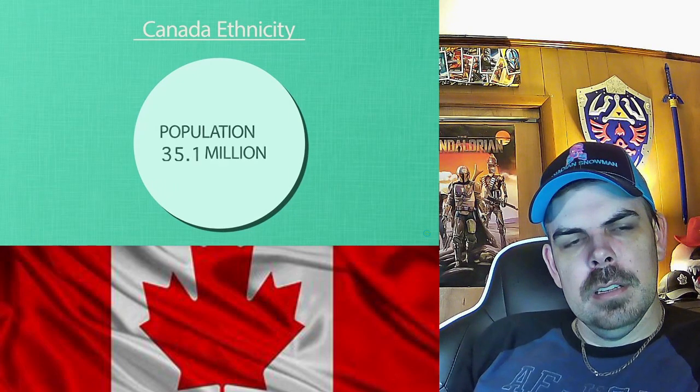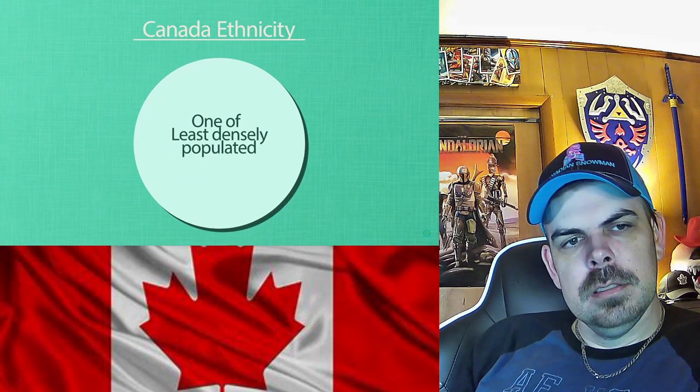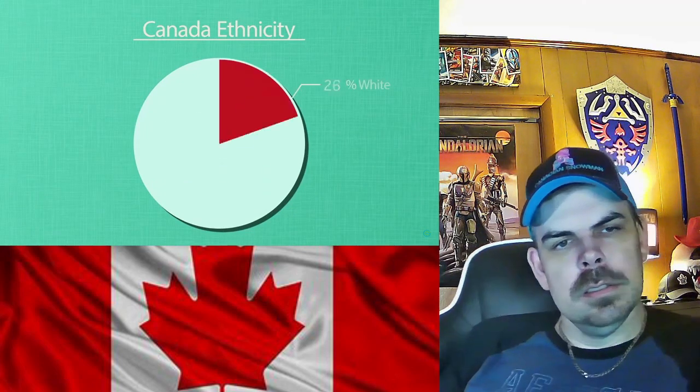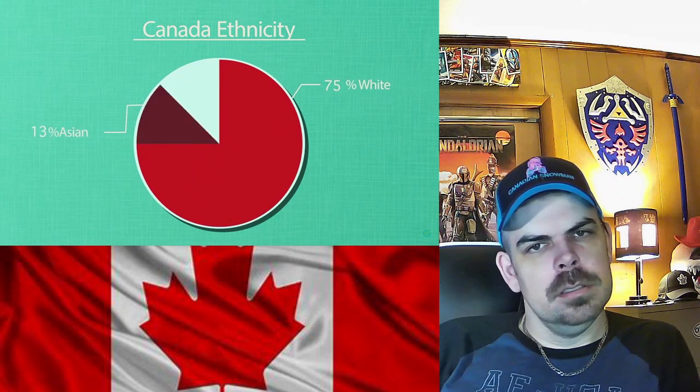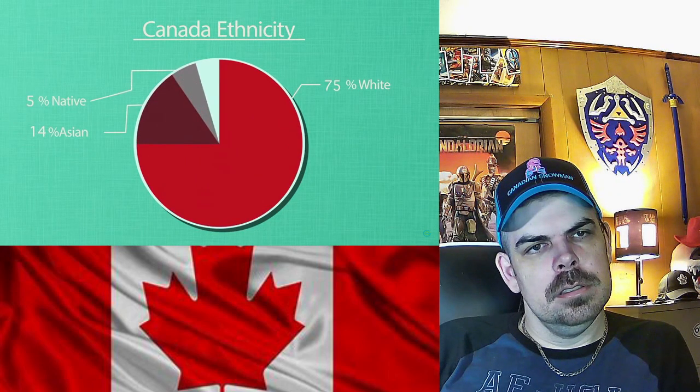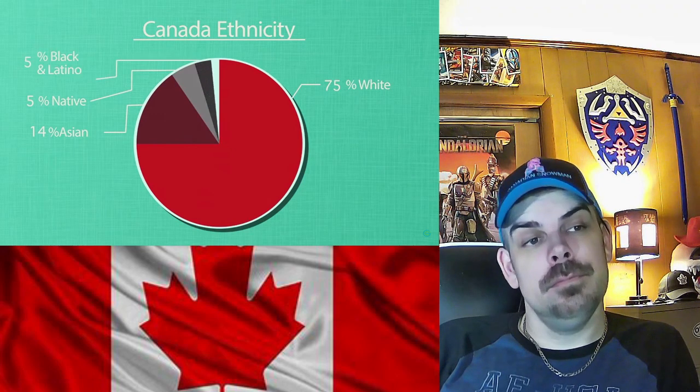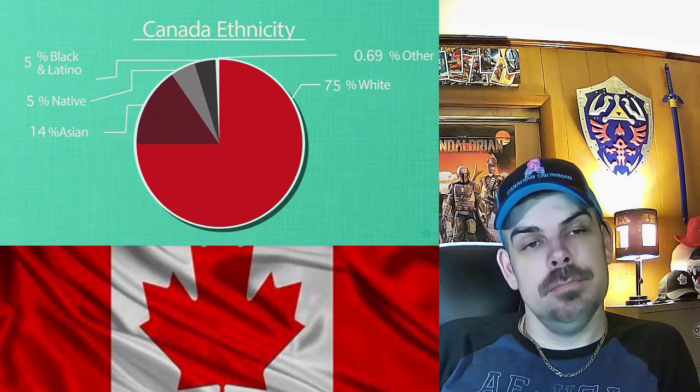Canada is one of those places where everybody kind of fits in. Canada has about 35 million people making it one of the least densely populated places on Earth. About three quarters identify as white, Asians make up about 14%, natives and aboriginal peoples make up a surprising 5%, Blacks at 3%, Latinos at 2%, and the rest are everything else.